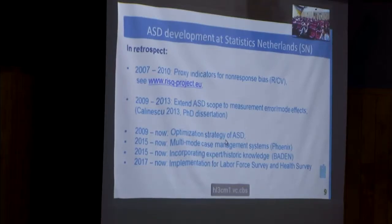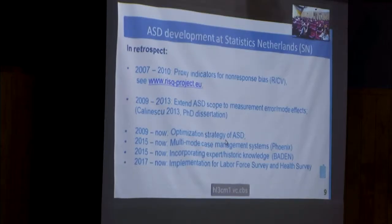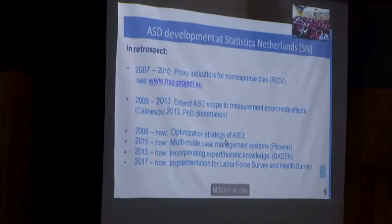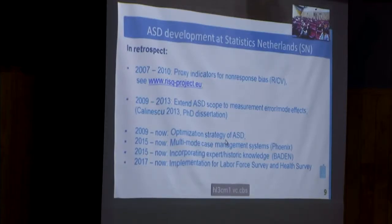In 2015 these management systems started to evolve, allowing us to first start working on these kinds of designs. At the same time we realized we were trying to optimize a survey as a standalone survey — each time we only think about that one survey. We strongly believe there's a lot of information in the past and in other surveys, so if you do adaptive survey design, the expected yield of your design could already be extracted from historical data. That's why we went to this approach where we try to incorporate historic knowledge. Since two years ago, for every redesign of a new survey, adaptive survey design is considered.